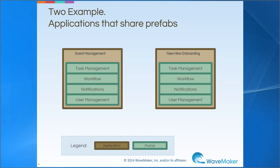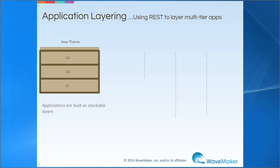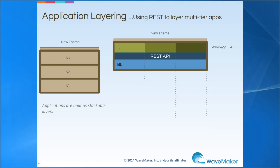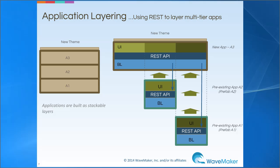Once we have a matured prefab ecosystem, we can see how applications can be built as stackable layers. WaveMaker intends to enable its users to build a fully functional application just by dragging and dropping relevant services. These services are created as prefabs and stacked together to form the target application. Note that a prefab can contain another prefab within itself, thereby creating tiers of layered apps.